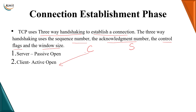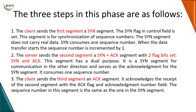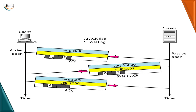The term active open means that the client plays an active role in initiating a connection, where the client will send a message to the server saying that it would like to establish a connection. Whereas, a server is in a passive open state, meaning it will not initiate any connection request; rather it will look for a message coming from a client. Three-way handshaking means there are three steps in the connection establishment phase.